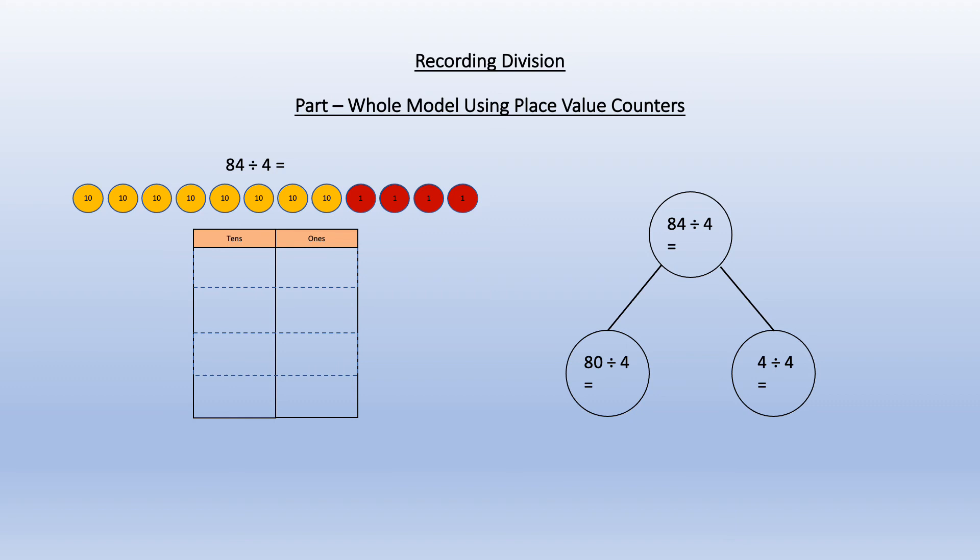Then using my whole part model diagram I can draw 2 circles coming off the original circle to show the partitioning and divide each of the tens and units by 4. My grid can be divided into 4 rows as this is what I'm going to divide the counters up in. So I put one yellow tens counter in the first row, and the second yellow tens in the second tens row, and the third yellow tens in the third tens row, and continue putting them in until they have all been used.